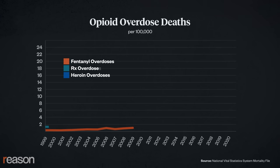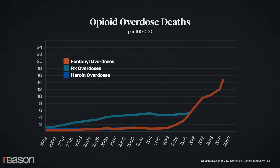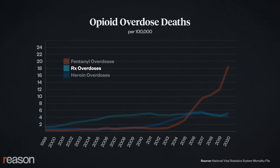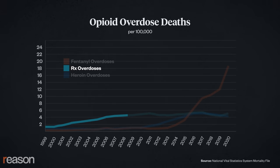This chart from the CDC gives us a clearer picture of events. Drug-related deaths involving commonly prescribed opioids like hydrocodone and oxycodone did rise in the first decade of the 21st century, but then leveled off.